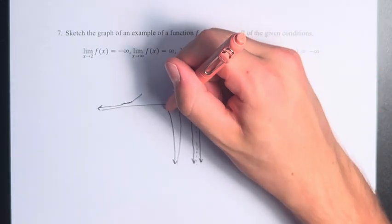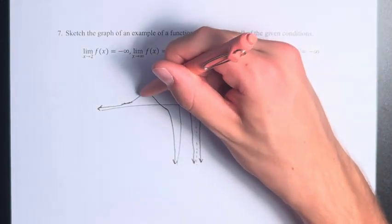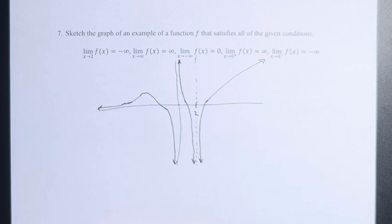All we have to do is just connect up these points, get a nice smooth function. Suppose you don't technically have to do that, but just for the cleanliness of the graph, we're going to do that. And we now have an example of a function which satisfies all of these given conditions.